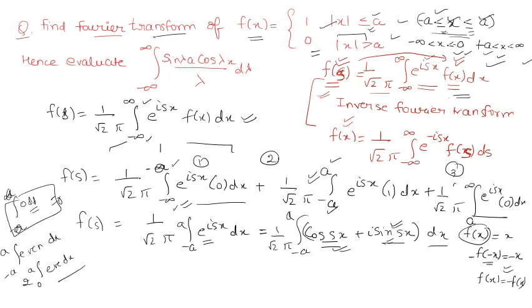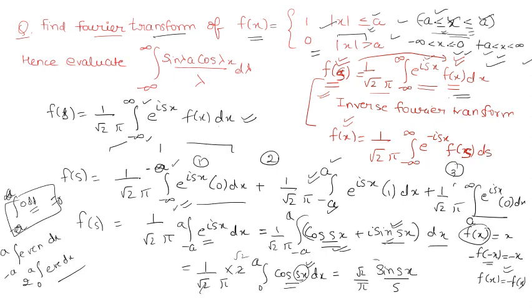Since cos(sx) is an even function, we have F(s) = 1 by root 2π times twice the integral from 0 to a of cos(sx) dx. The integral of cos(sx) is sin(sx)/s. So this becomes root 2 upon π times [sin(sx)/s] from 0 to a. Substituting the limits gives root 2 by π times sin(sa)/s. So your Fourier transform is F(s) = √(2/π) · sin(sa)/s.